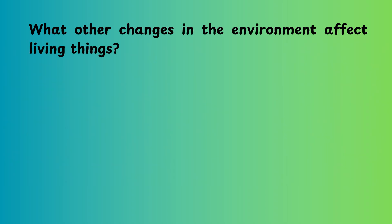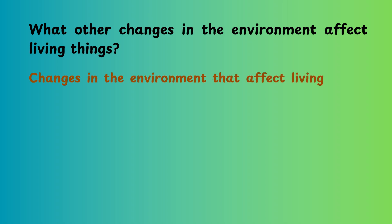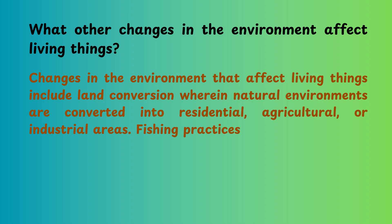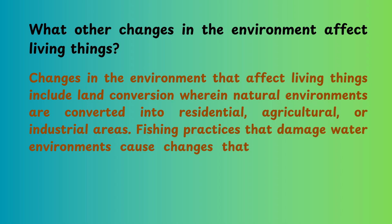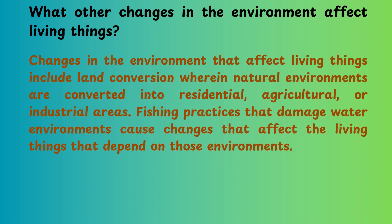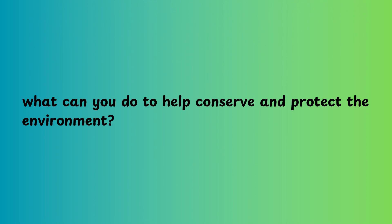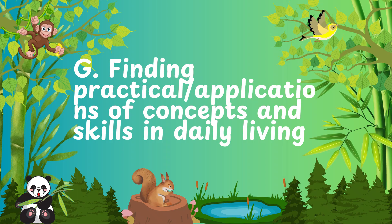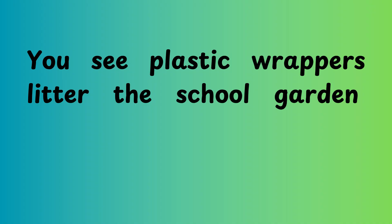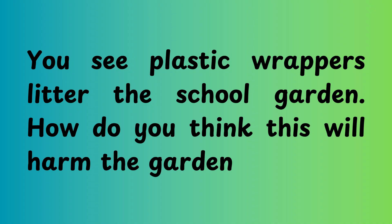What other changes in the environment affect living things? Changes in the environment include land conversion, where natural environments are converted into residential, agricultural, or industrial areas. Fishing practices that damage water environments cause changes that affect the living things that depend on those environments. What can you do to help conserve and protect the environment?